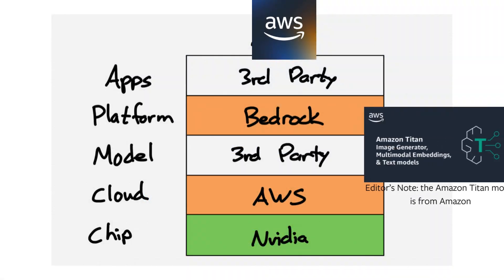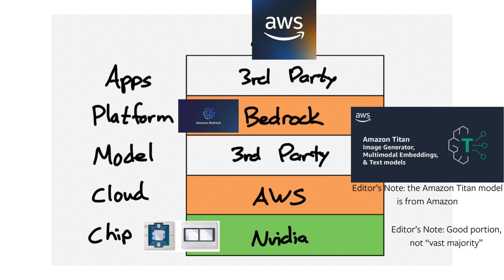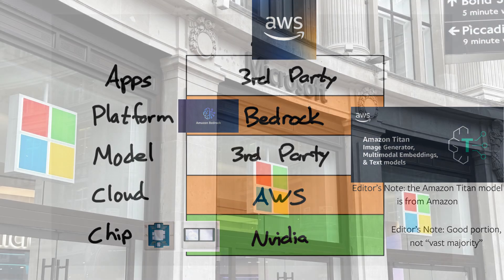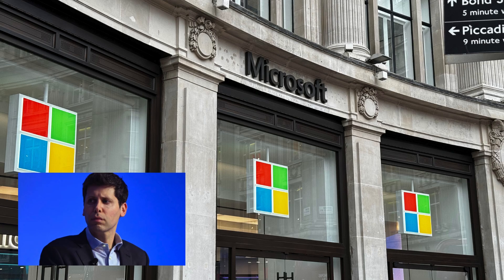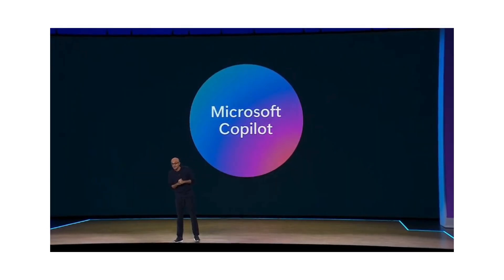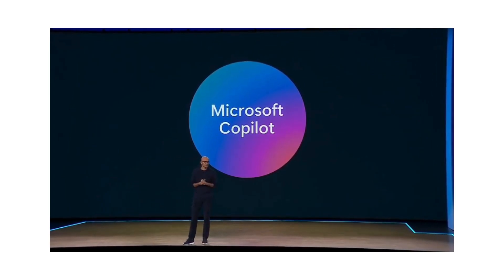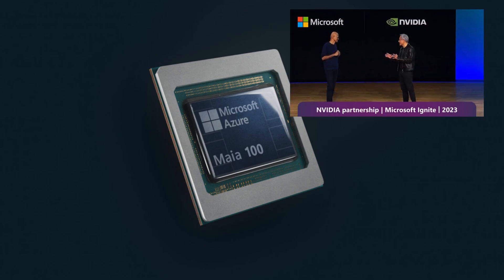On the other extreme is AWS, which doesn't have any of its own models. Instead, its focus has been on its Bedrock managed development platform, which lets you use any model. Amazon's other focus has been on developing its own chips, although the vast majority of its AI business runs on NVIDIA GPUs. Microsoft is in the middle, thanks to its close ties to OpenAI and its models. The company added Azure Models as a Service last year, but its primary focus for both external customers and its own internal apps has been building on top of OpenAI's GPT family of models. Microsoft has also launched its own chip for inference, but the vast majority of its workloads run on NVIDIA.